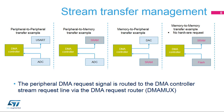Memory-to-memory mode allows transfers from one address location to another without a hardware request. Once the stream is configured and enabled, the transfer starts immediately. When data is transferred to or from a peripheral, the hardware request coming from the selected peripheral is used to trigger the data transfer on the DMA peripheral port. Once the transfer is completed, the request is acknowledged.